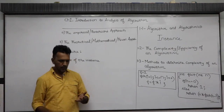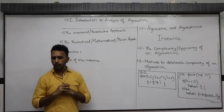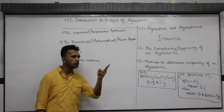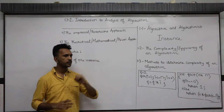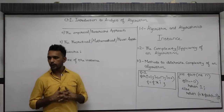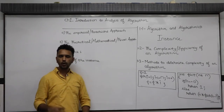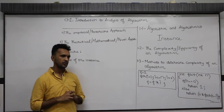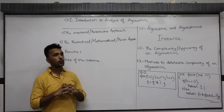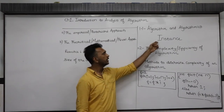Let's take the example of a program to find the factorial of a number. If the user gives input n equal to minus 8, that is invalid, because factorial is always found for numbers greater than or equal to zero. So for the problem of finding factorial of a number, n equal to minus 8 is an invalid input. In other words, minus 8 is not an instance of the problem.